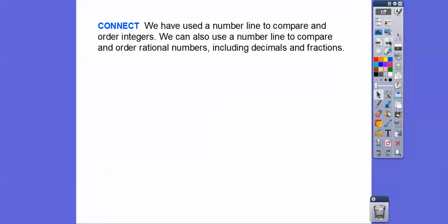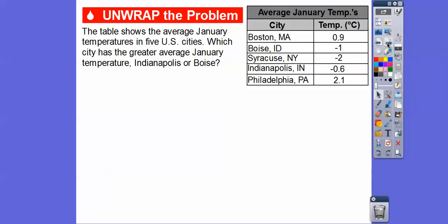So we've used a number line to compare and order integers in the last lesson. We can also use the number line and other methods to compare and order rational numbers that include fractions and decimals and all those groovy things. This table shows the average January temperatures in five U.S. cities. So which city has the greater average January temperature?